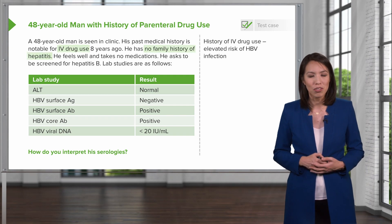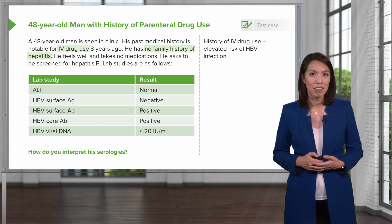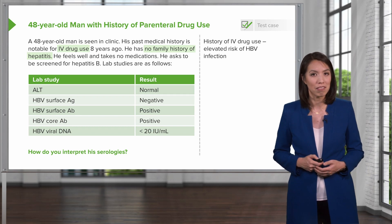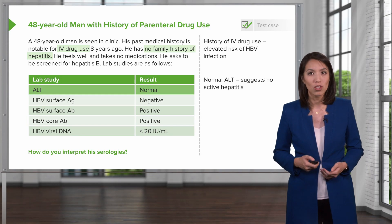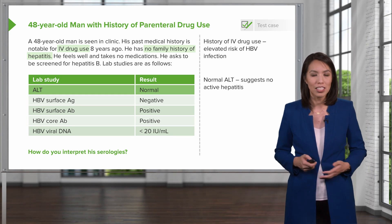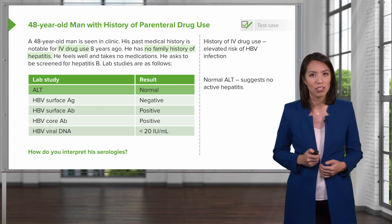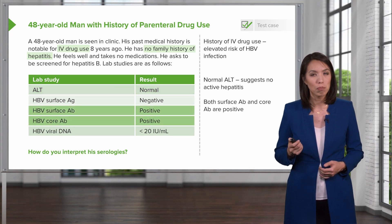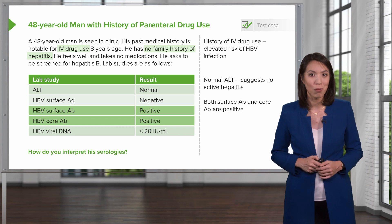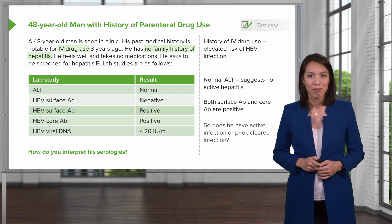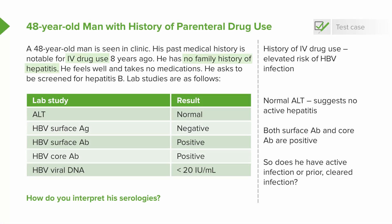First, he has a history of intravenous drug use, which places him at elevated risk of having a hepatitis B infection. We first look at his ALT — because it's normal, this suggests there is no active hepatitis currently. He has both a positive surface antibody and a positive core antibody, so we'll talk about what that means next. The big question is: does he have an active infection, or did he have a prior infection that was cleared?